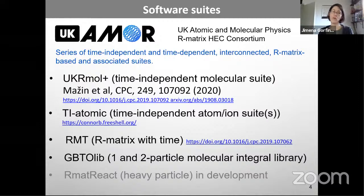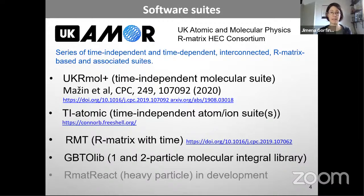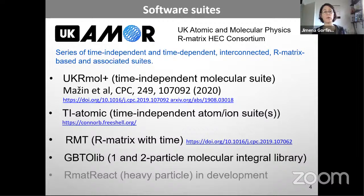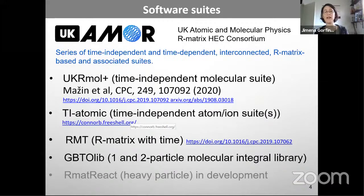In the UK we have a high-end computing consortium on atomic codes called UKRAMP, which coordinates development of the several UK-based R-matrix suites. These include time-independent and time-dependent interconnected codes. The main suites are: UKRmol+ (time-independent molecular), a time-independent atomic suite maintained by Conor Ballance at Queen's Belfast, the RMT (R-matrix with time) code developed mainly by Andrew Brown and Hugo van der Hart, a GBTO library for molecular integrals, and an R-matrix-based heavy particle collision code in development.